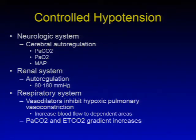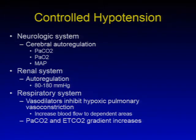With the renal system, there is autoregulation between 80 to 180 mmHg. The respiratory system involves vasodilators that inhibit hypoxic pulmonary vasoconstriction. This increases blood flow to dependent areas, and the PaCO2 and end-tidal CO2 gradient increases.